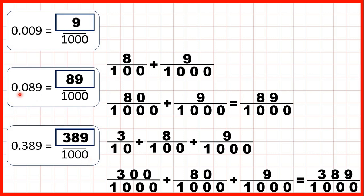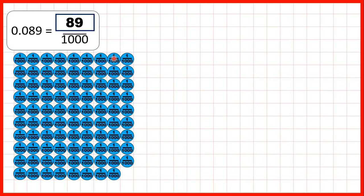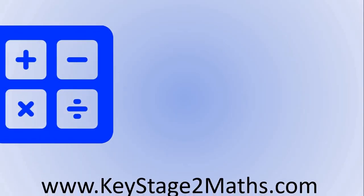Let's take one last look at 0.089. The eight is in our hundredths place, so we can show eight hundredths place value counters, and the nine is in our thousandths, so we show nine thousandths place value counters. Remember, we can exchange one hundredth for ten thousandths, and if we do that to all of our hundredths, that gives us 89 thousandths altogether.